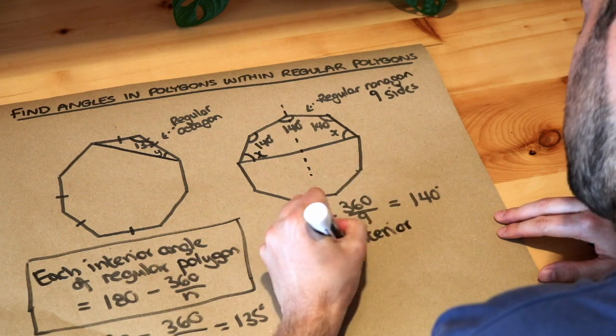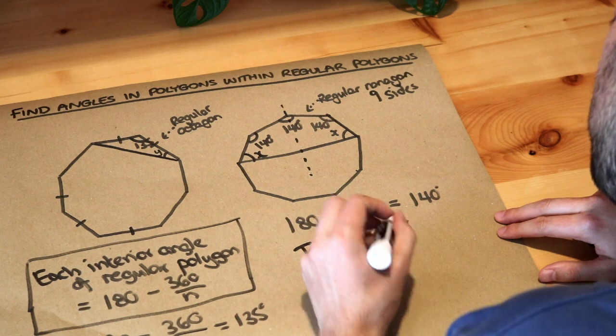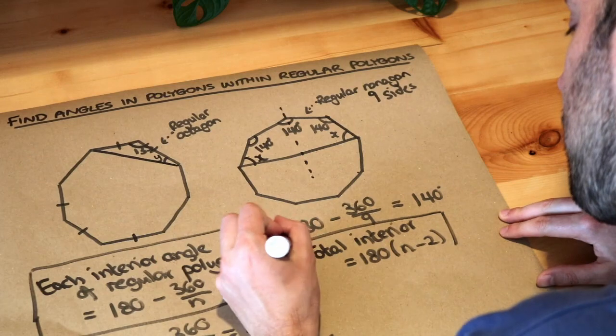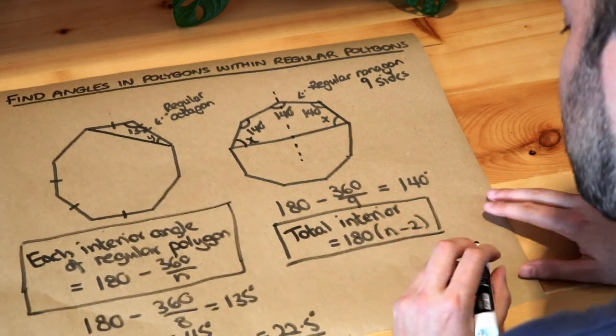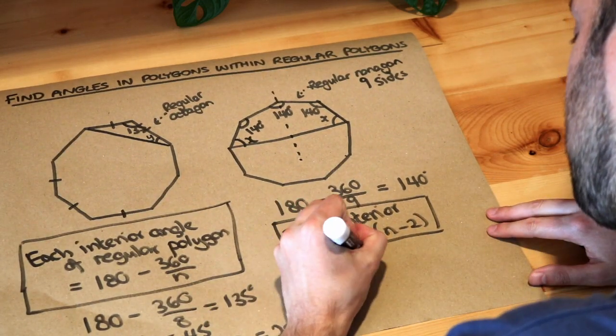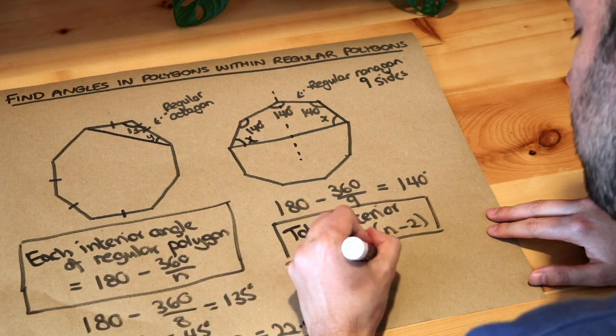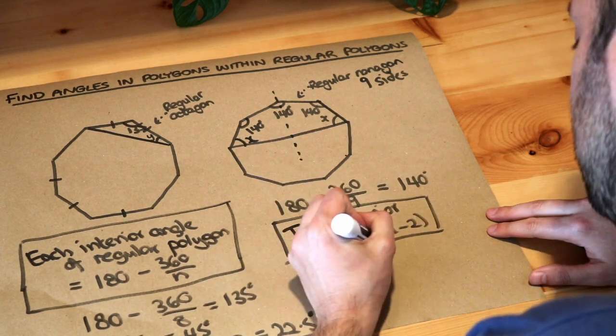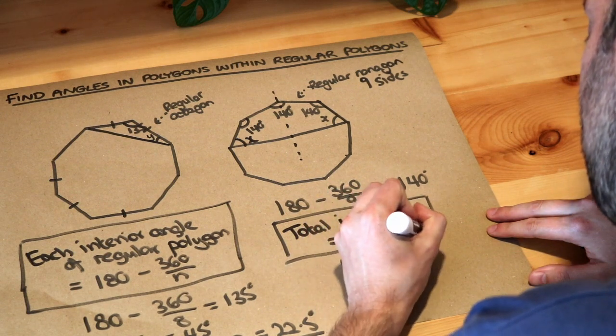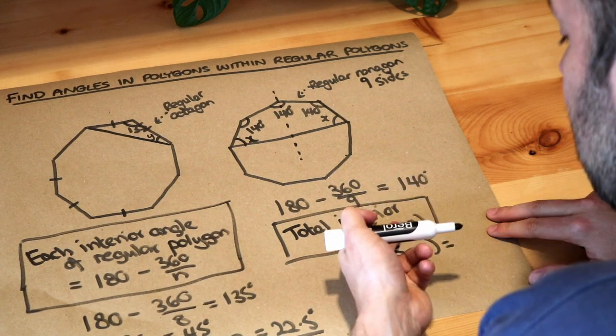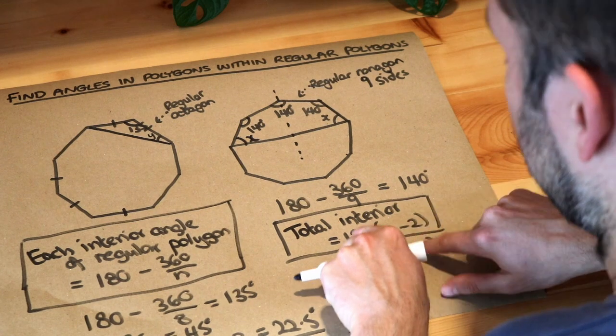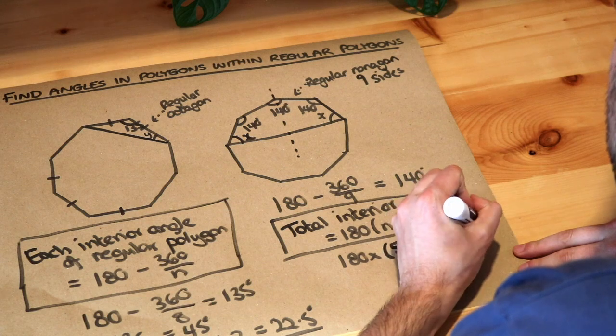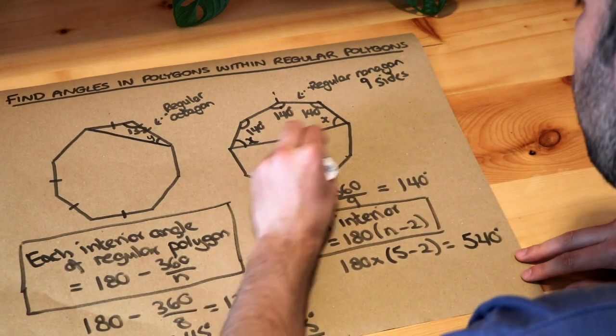Well, we just do 180 multiplied by the number of sides minus two, so we're going to use this formula here. The total interior angle, so we just do 180 multiplied by n minus two, so the number of sides is five. It's a pentagon, so five minus two—remember when you have things next to each other in algebra it means it's 180 times by n minus two—so that gives you 540 degrees.